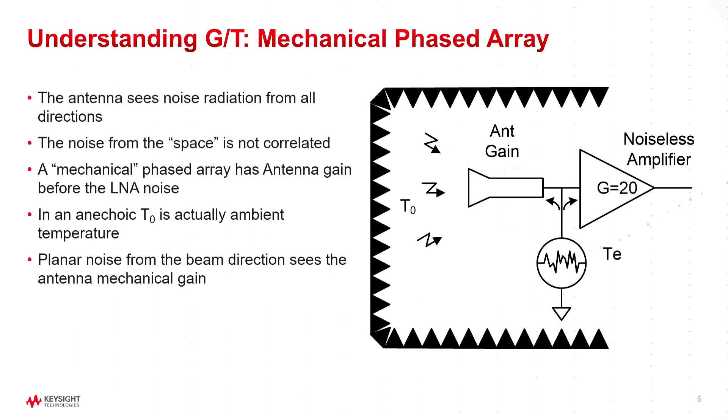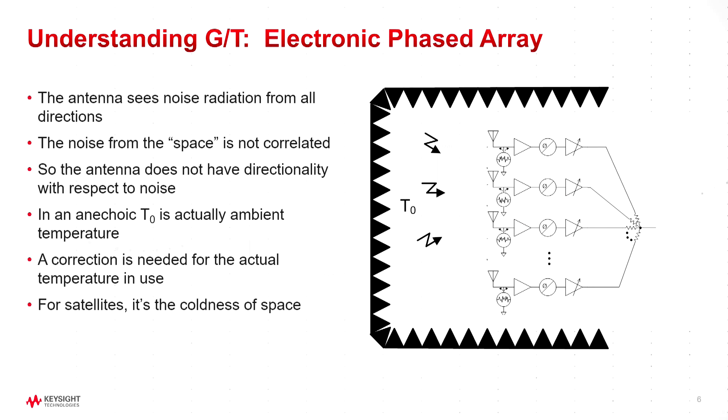And so because of that, noise from anywhere in the chamber can get into the antenna and it makes the traditional method of measuring this not work well. Here we show phased array. Each one of these antenna elements has almost no gain and therefore noise from anywhere in the chamber can get in.